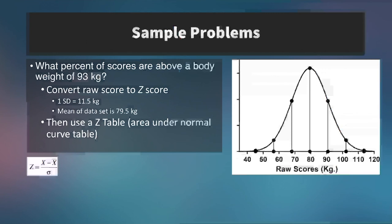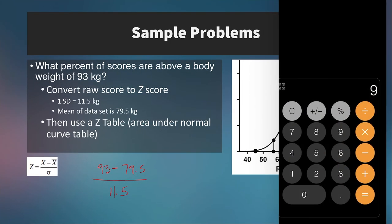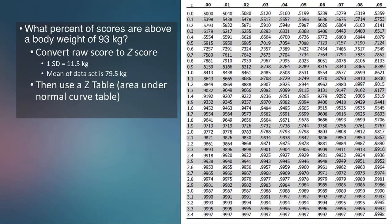What percent of scores are above a body weight of 93 kilograms? Converting to a z-score: 93 minus 79.5 over 11.5 gives a z-score of 1.17. Looking that up on the z-table, following the row and column, we get a percentile of 87.9%. Since the question asks for scores above 93 kilograms, we subtract that from 100, which gives us 22.1%.